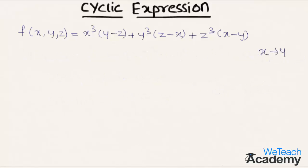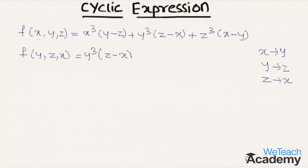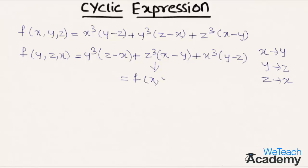But if we replace x by y, y by z, and z by x simultaneously in f of x, y, z, we get f of y, z, x equal to y cube into z minus x, plus z cube into x minus y, plus x cube into y minus z. We observe that this expression is equal to f of x, y, z.